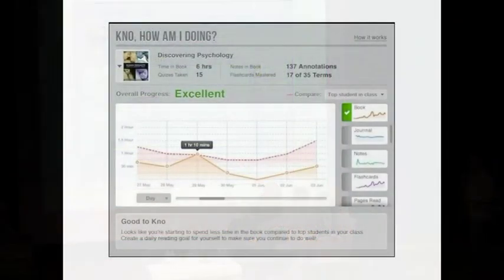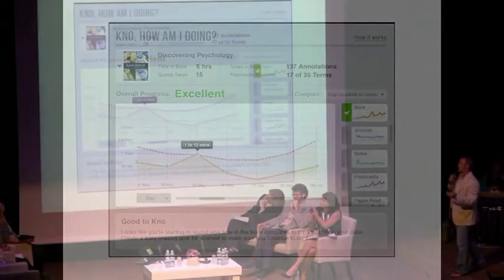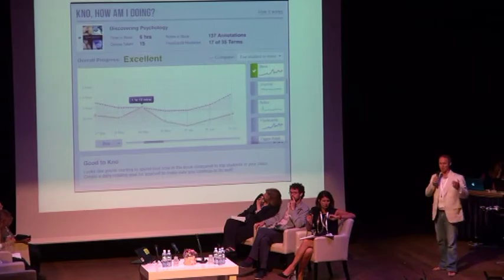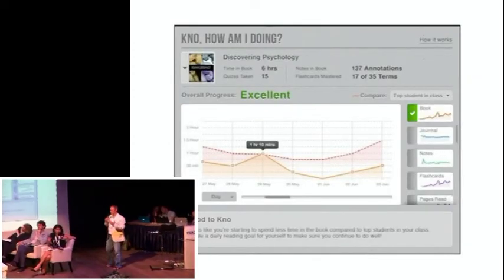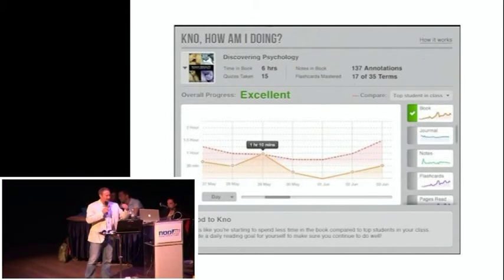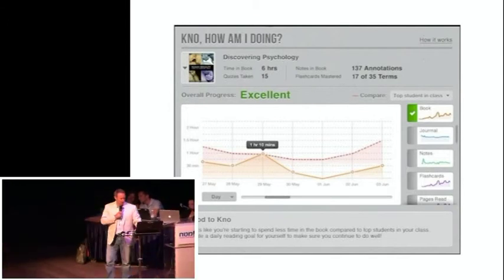There are some pretty bad analytics out there. So, for example, this is a textbook reader. And so here it's measuring how many pages did I read? How long was I logged into my e-book? How many annotations did I make? And it's telling me my overall progress is excellent and it's giving me an engagement score. What does any of that actually mean? Maybe I'm not a note taker. Maybe I left the computer on and I walked out for half a day and came back.